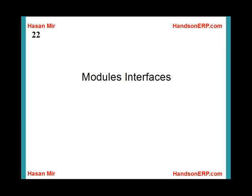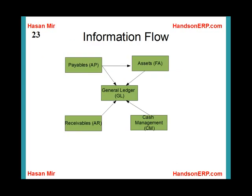Let's quickly talk about module interfaces — how modules talk to each other. Information flows from one module to another. For example, all accounting information flows from all modules into the General Ledger; invoices flow from Accounts Payable into Fixed Assets so that assets are automatically created. Although modules are standalone software, the real strength comes when they talk to each other — that's why companies implement the whole ERP across all their departments.